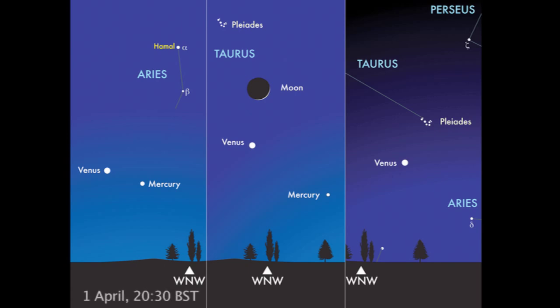Now as well as an opportunity to see Pallas, there are also going to be some great post-sunset views to be had this month. On the 1st of April, after sunset, Venus and Mercury are going to be visible shining way low in the west.